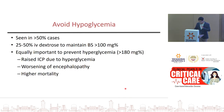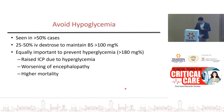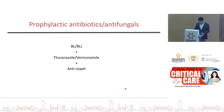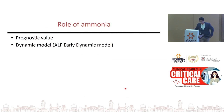Avoid hypoglycemia — it can be seen in more than 50% of ALF cases. Maintain blood glucose above 100 mg/dL while also avoiding hyperglycemia. Most liver transplant centers follow prophylactic antibiotics and antifungals. Ammonia has prognostic value and must be monitored in all patients with ALF.